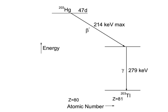Internal conversion is a radioactive decay process wherein an excited nucleus interacts electromagnetically with one of the orbital electrons of the atom. This causes the electron to be emitted from the atom.